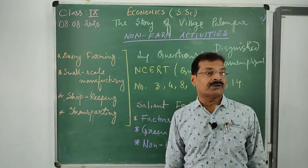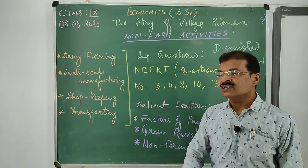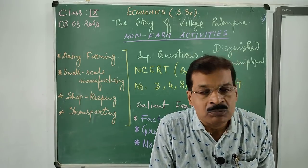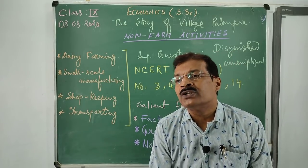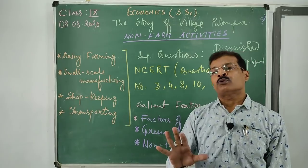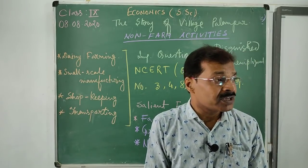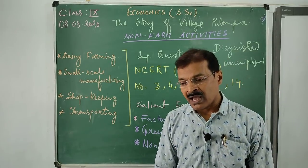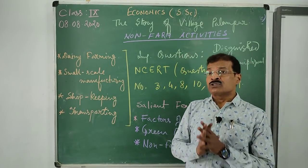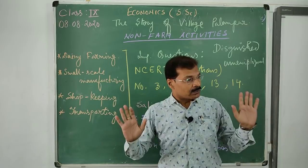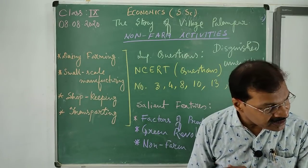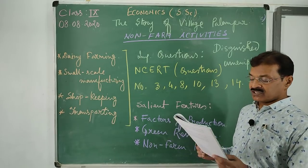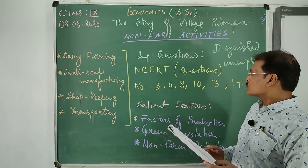Question number 4 is about the importance of increasing irrigation. With electricity and irrigation, farmers will not be uncertain about their productivity and will not have to depend upon the vagaries of monsoon. More and more area must come under irrigation.